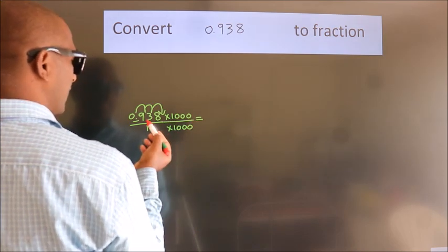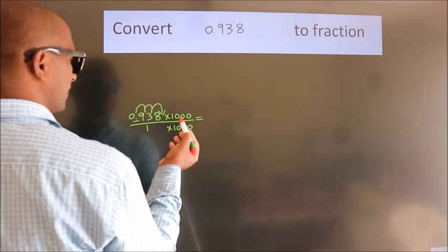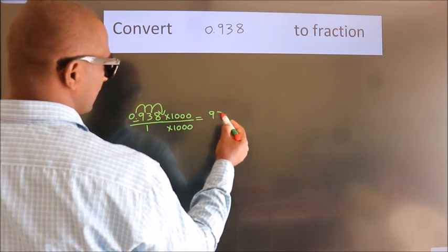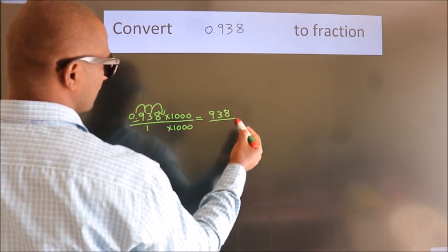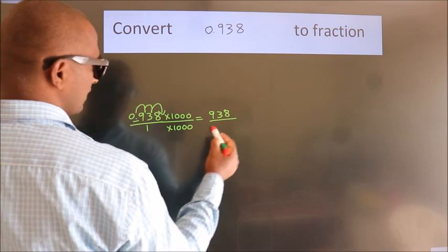0.938 into 1000 equals 938. 1 into 1000 equals 1000.